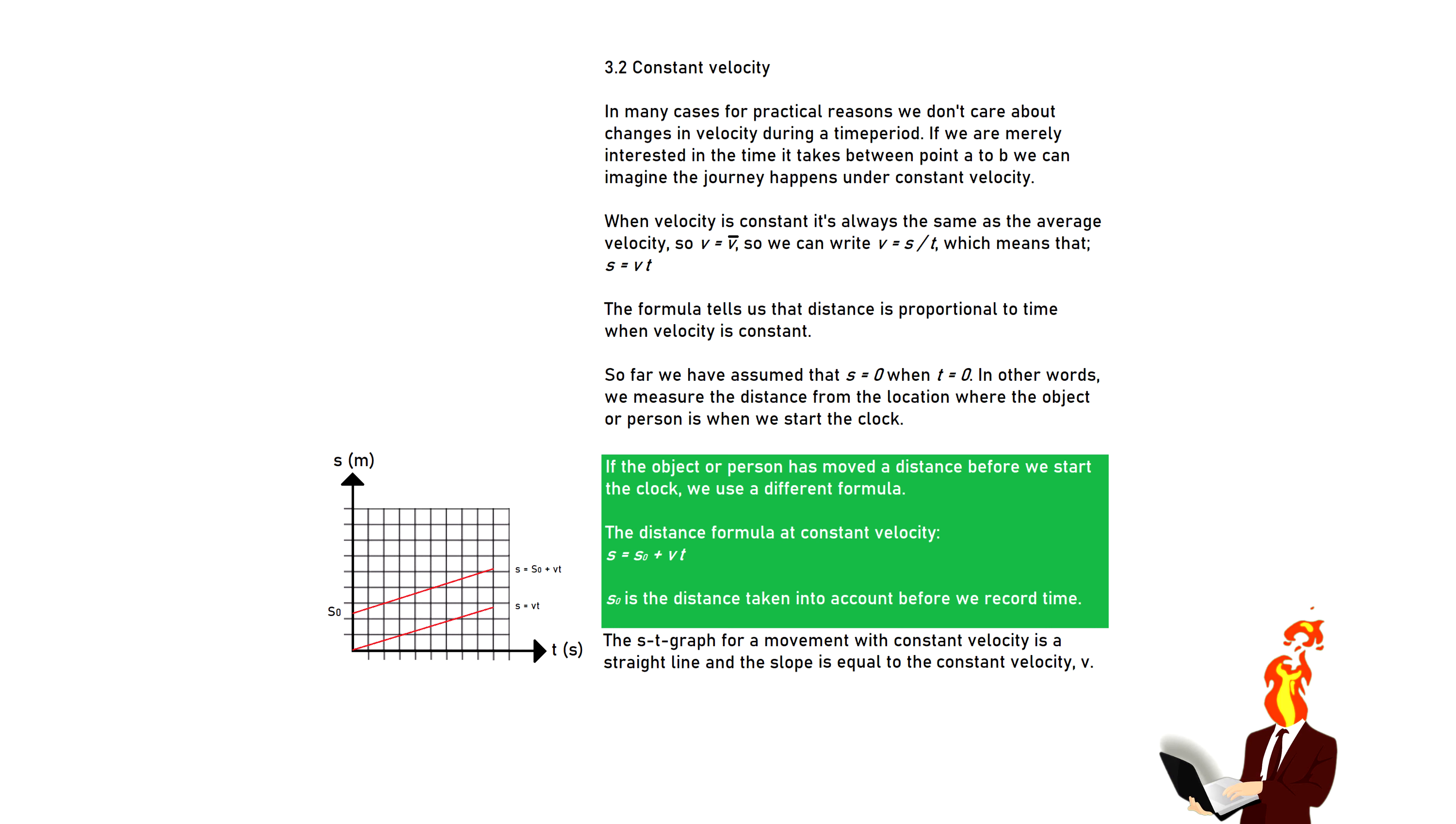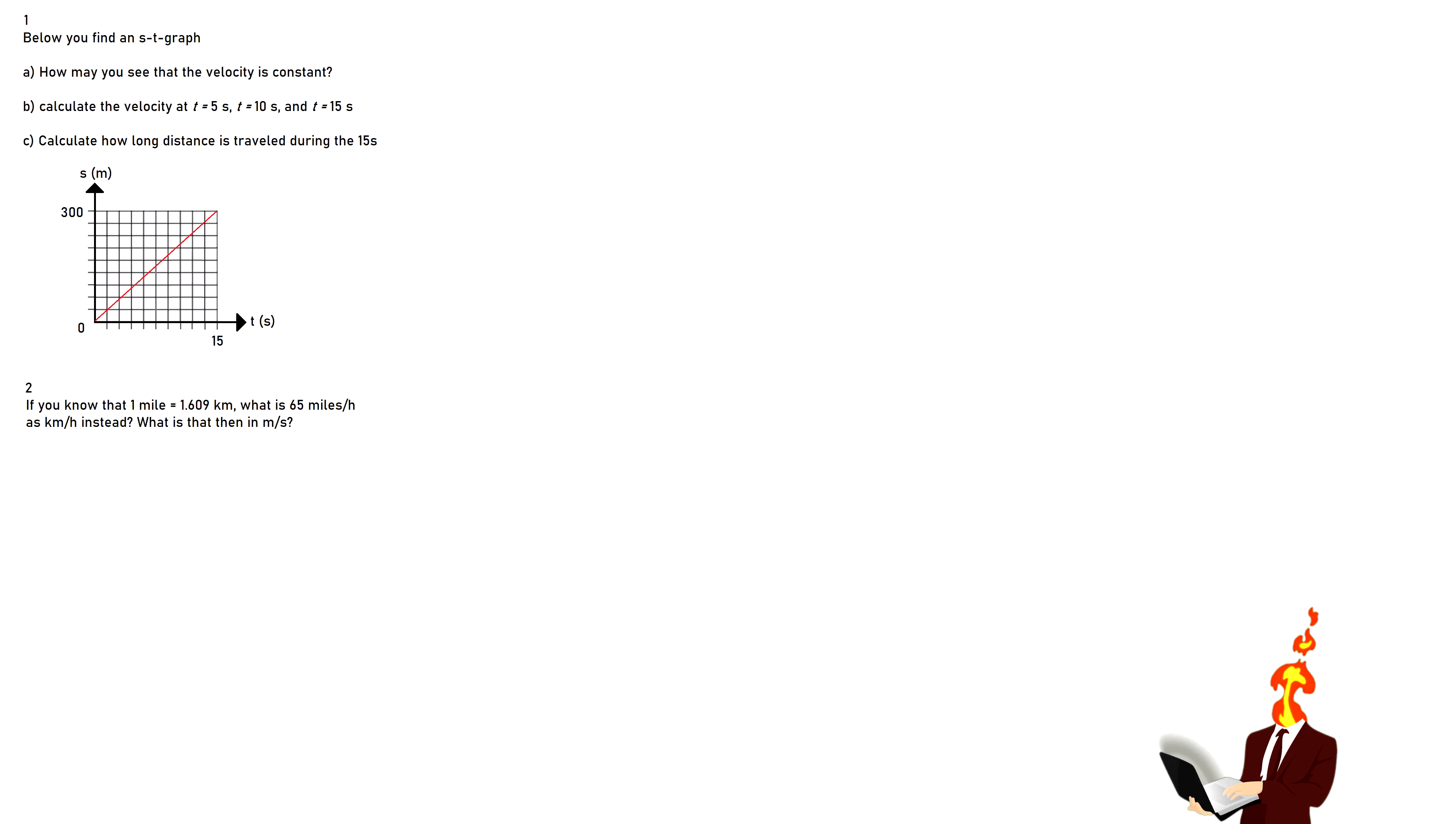The distance formula at constant velocity is S equals S naught plus V times T. S naught is the distance taken into account before we record time.